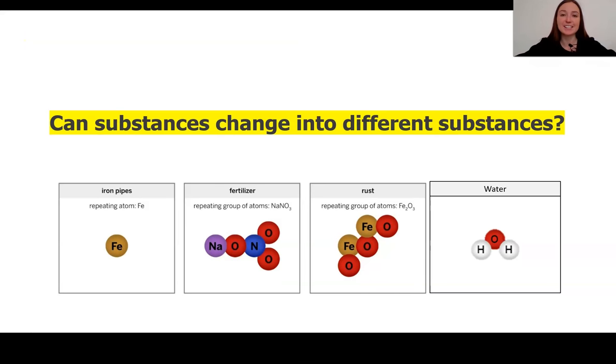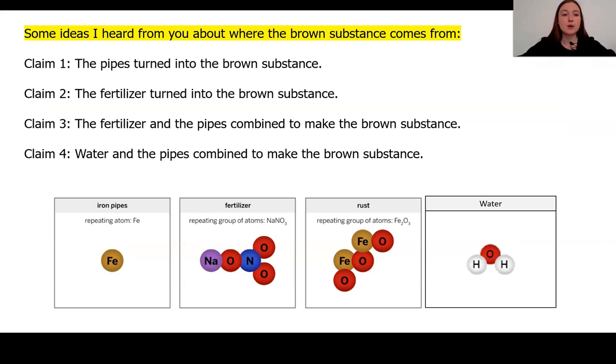So this really leads us to our question that we are trying to study today, which is can substances change into different substances? In our claims, we have different ideas about things that could have changed and become the rust or the brown substance.